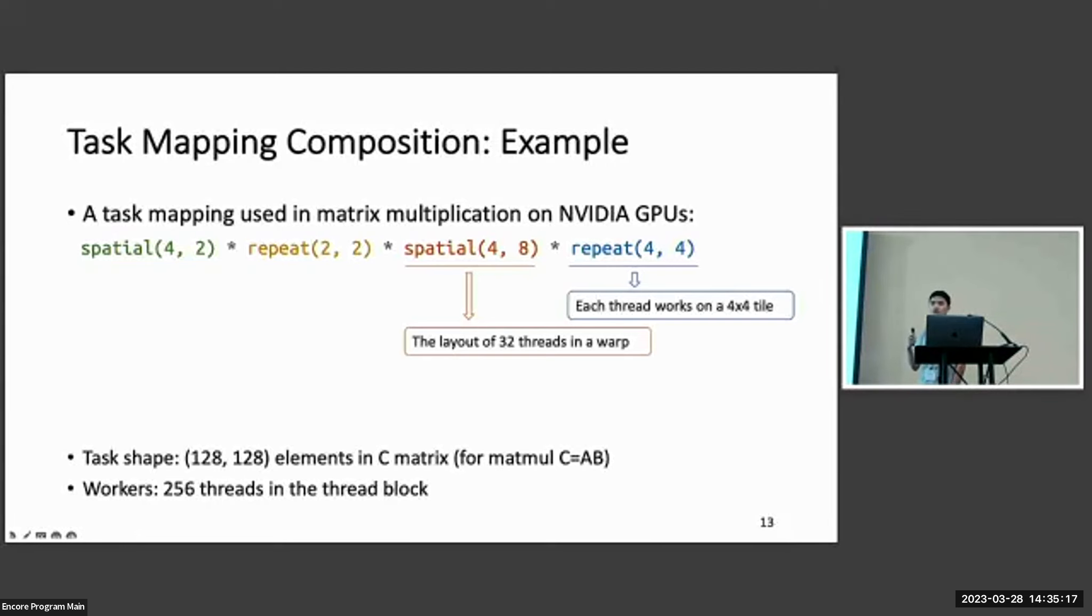Here, we describe that each thread will work on a 4-by-4 tile, and the layout of the 32 threads in a warp. And each warp will repeat 2 by 2 times, and there will be the layout of the 8 warps in the thread block. In this simple way, we can describe the complex mapping from the threads in the thread block to different elements in the C matrix.